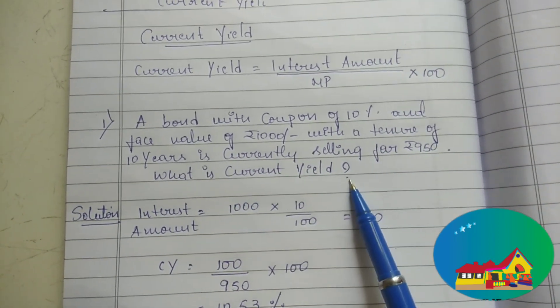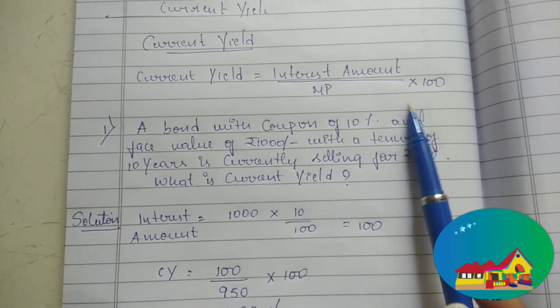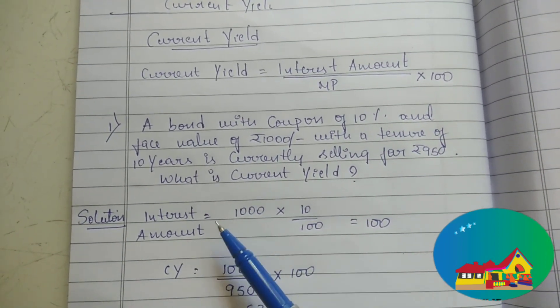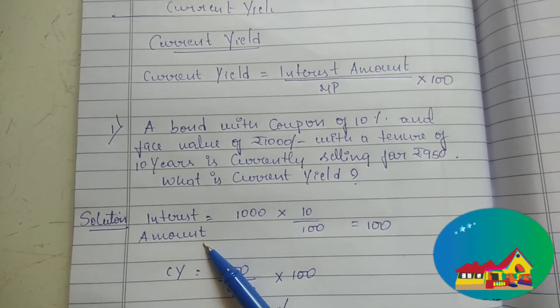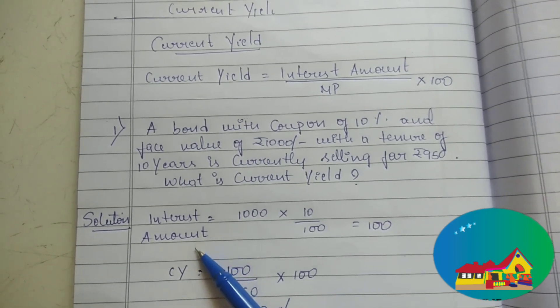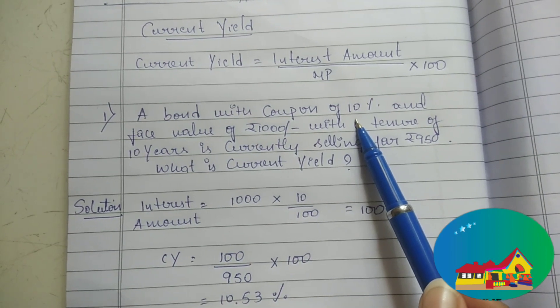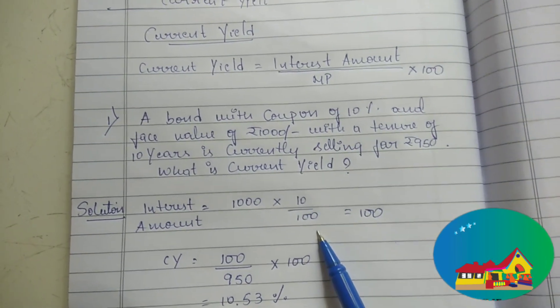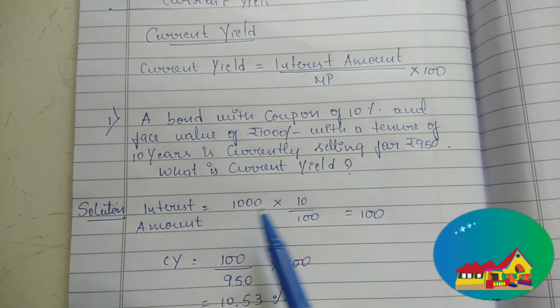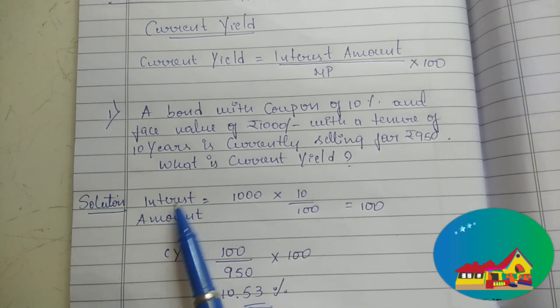Current yield, we have to find out now. Interest amount, we have to find out. 1000, face value is 1000 into 10% into 10 by 100. So, this is the interest amount.